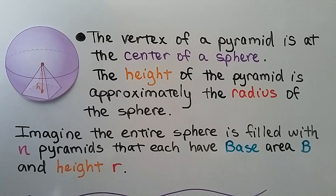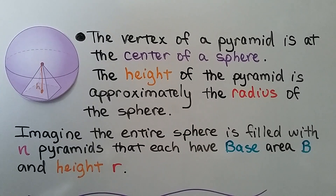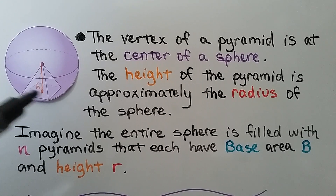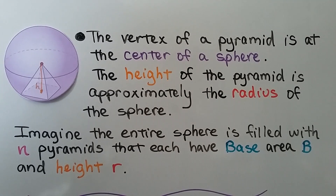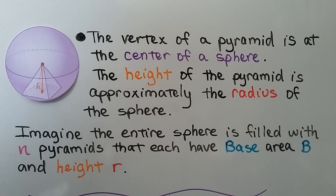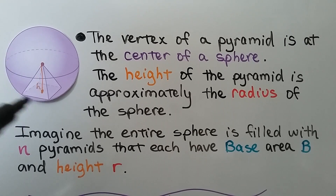The vertex of a pyramid is at the center of a sphere — we can also call that its apex. The height of the pyramid is approximately the radius of the sphere; it's not quite the radius because it has a flat bottom and the sphere is curved. Imagine the entire sphere is filled with n pyramids, each with base area B and height r — we're using the radius for the height as an approximation.